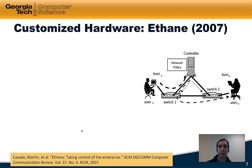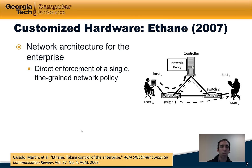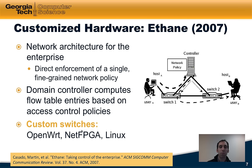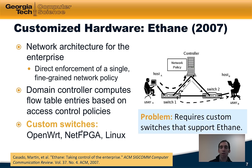Customizing the hardware in the data plane potentially makes it easier to support a much wider range of applications in the control plane. The first project to realize this was the Ethane project, which presented a network architecture for the enterprise that allowed direct enforcement of a single fine-grained network policy at a domain controller. That domain controller would compute the flow tables to be installed in each of the enterprise's switches based on the access control policies defined. Ethane required the deployment of custom switches, implemented based on OpenWrt, NetFPGA, and Linux, which of course required custom hardware supporting the Ethane protocol.